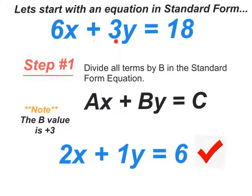In this example, in front of y you have a plus 3, so that's positive 3. Your first step is to take all 3 terms and divide them by 3. What happens is 6x becomes 2x, plus 3y becomes plus 1y. And over here, do not forget the right-hand side of the equation, 18 divided by 3 gives you 6. So that's my first step.